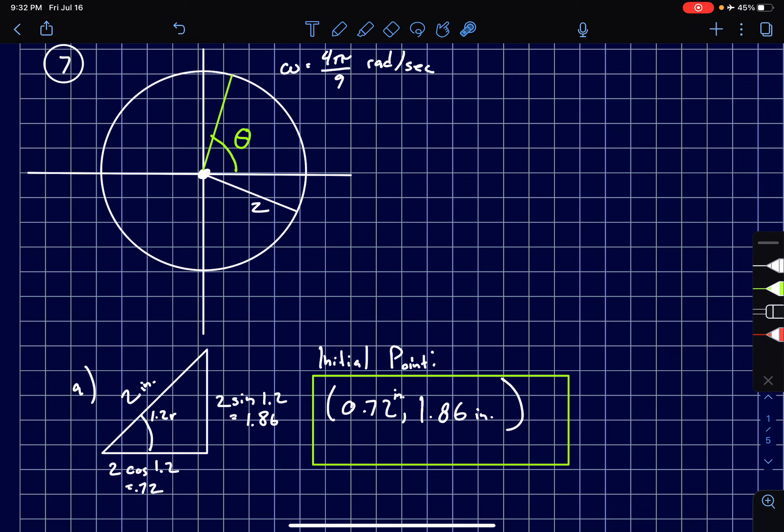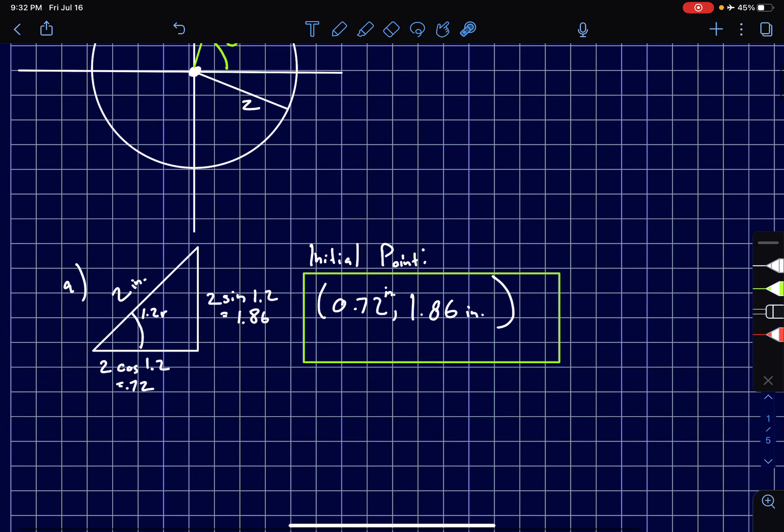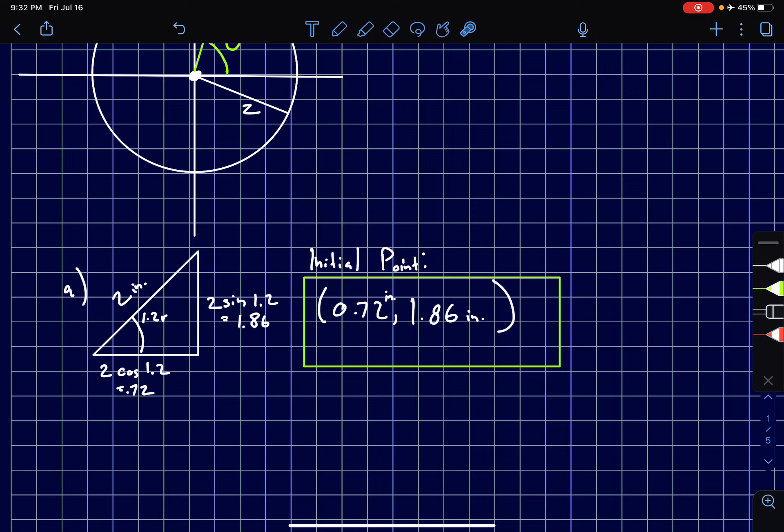We figure that it's going to start here and we create a right triangle, which you can see right here. Here's our radius of 2 as the hypotenuse and then with our 1.2 radian angle we plug that into our calculator using 2 sine of theta for x and 2 cosine of theta for y. The reason why we're doing that is we can think of this in one of two ways.